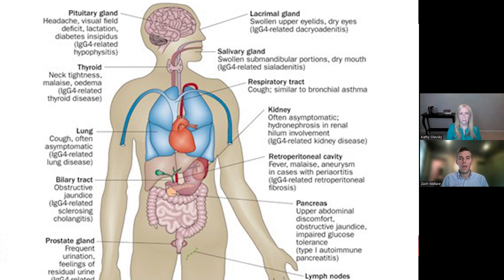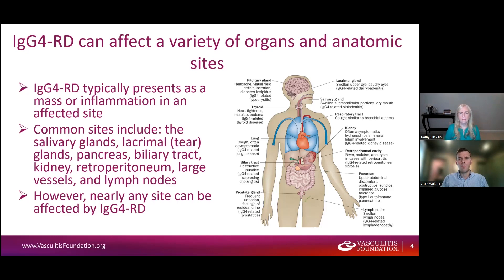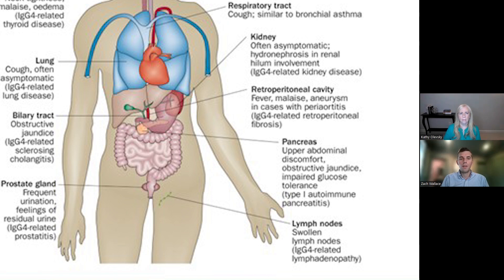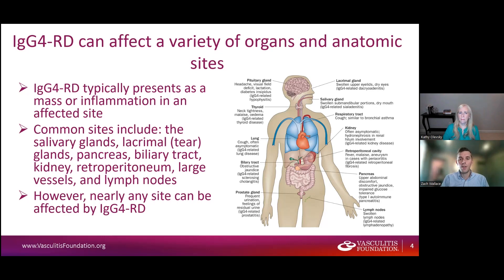Other areas that can commonly be affected are the pancreas and the biliary tract, down in our abdomen. Our pancreas and biliary tract are responsible for things like digesting food and making insulin to control blood sugar levels. The disease can cause inflammation and mass-type lesions in the pancreas. Similarly in our biliary tract — which is a series of tubes — it can cause inflammation and narrowing in those tubes. This condition can also affect the kidneys and can cause inflammatory processes around large blood vessels like our aorta as it goes through the abdomen, or the retroperitoneum. It can also cause some swelling of lymph nodes. Some patients have manifestations in other spots not listed here, but these are what we see most often.